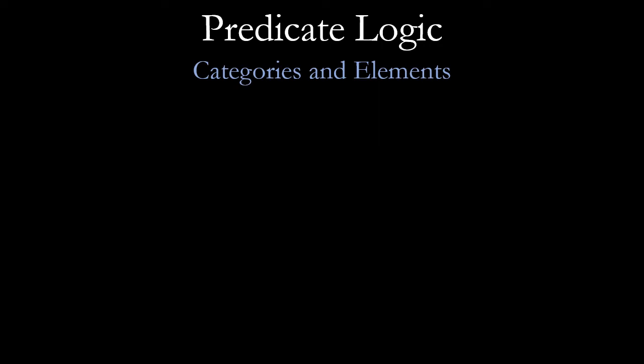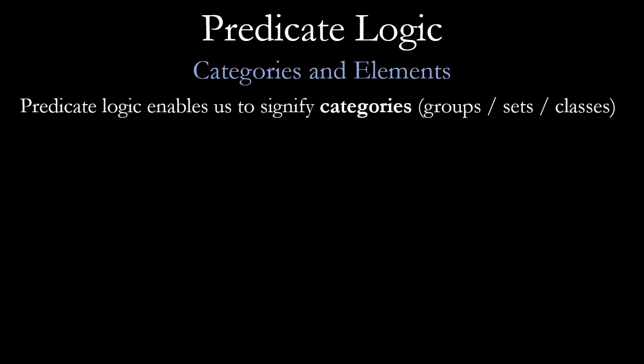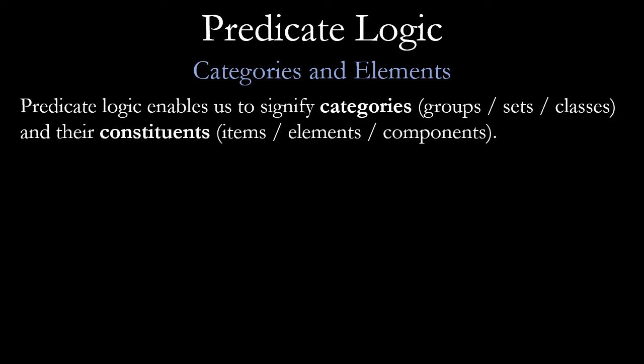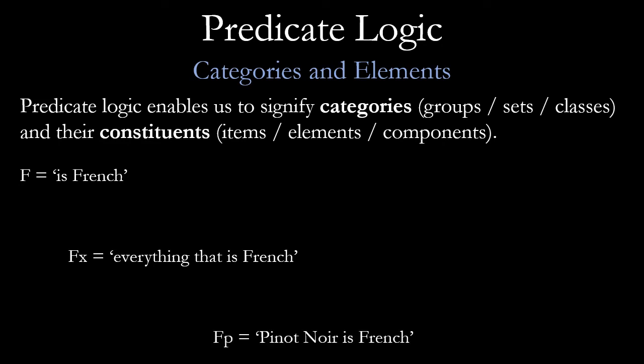One of the great things about predicate logic is that it enables us to signify categories, groups, sets, or classes and their constituents. For example, the predicate F meaning 'is French' — Fx means everything that is French, where x can mean everything and anything, and F qualifies it to mean 'is French.' If we want to use a constant, Fp means 'Pinot Noir is French,' where p is the constant for Pinot Noir.